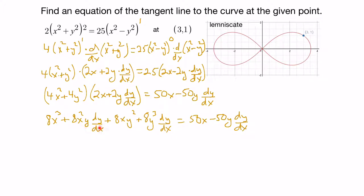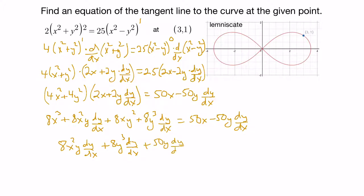Next, let's isolate the dy/dx terms — this one, this one, and this one — putting them on the left side and everything else on the right. On the left we have 8x²y · dy/dx + 8y³ · dy/dx, and bringing the −50y · dy/dx over makes it +50y · dy/dx. On the right we have 50x − 8x³ − 8xy².